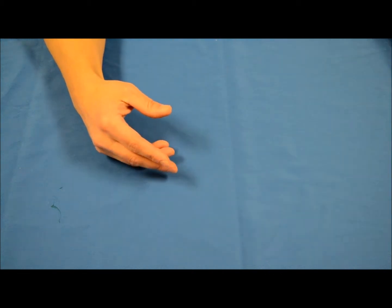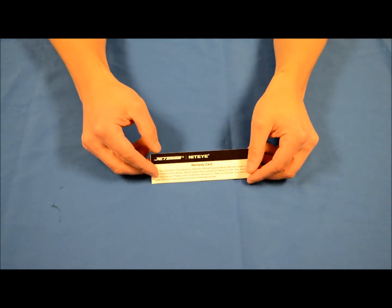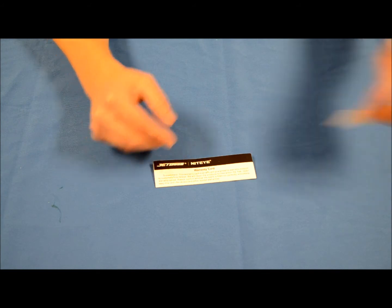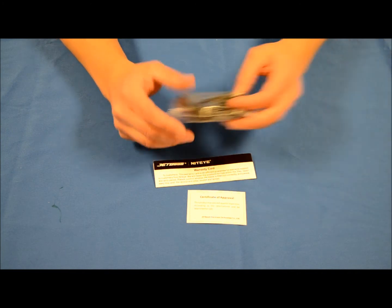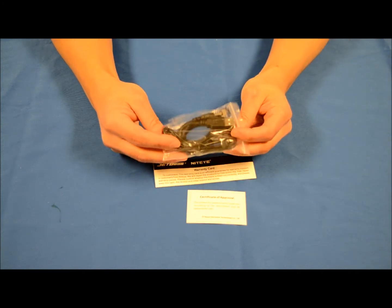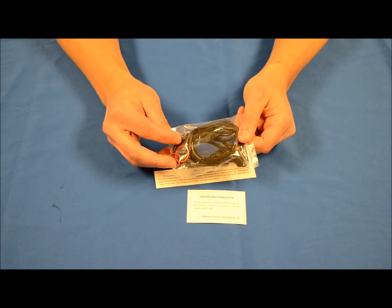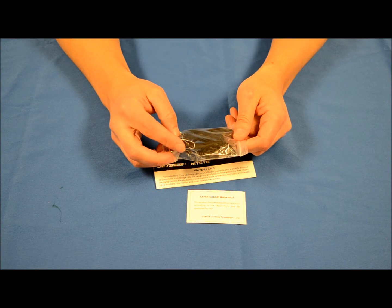Inside the box are Jetbeam's warranty card, the all-important certificate of approval, accessory goodie bag. We've got the USB charging cable, we've got two replacement o-rings, and a nice Jetbeam lanyard for the light.